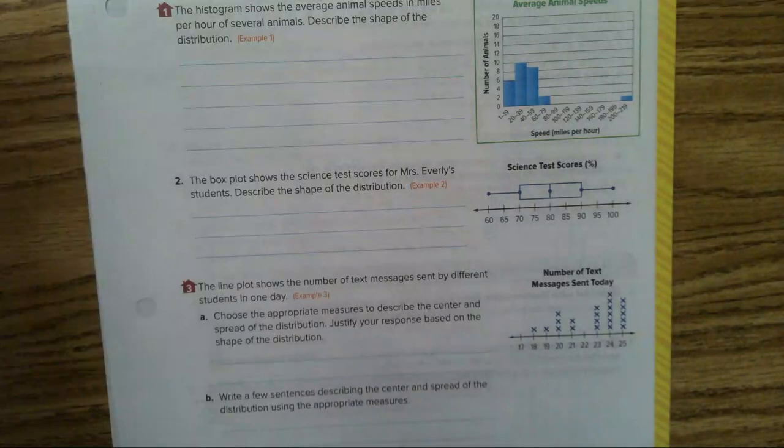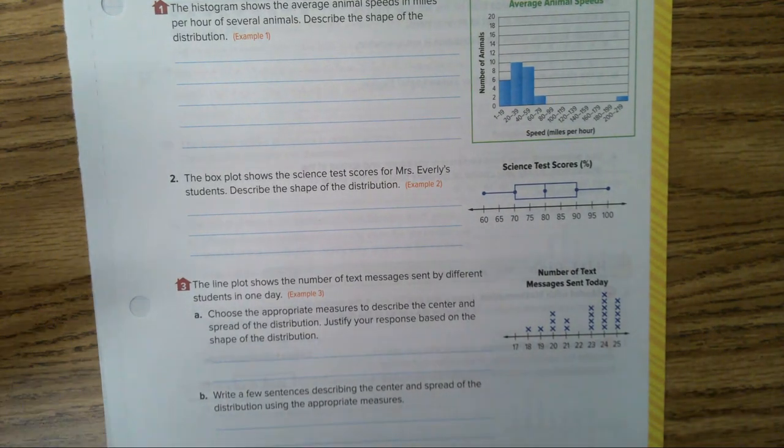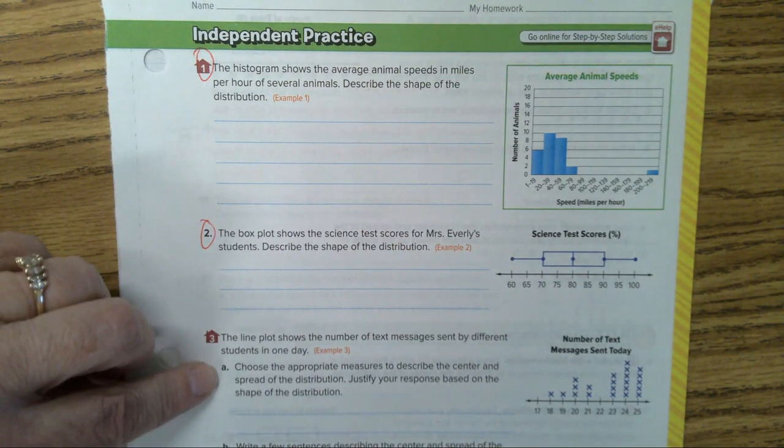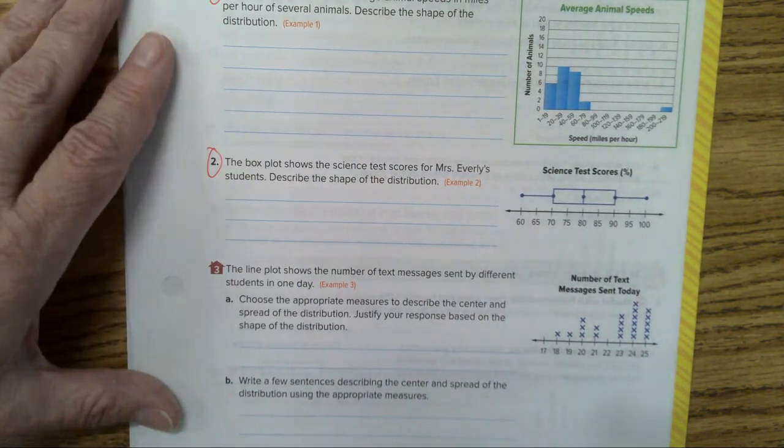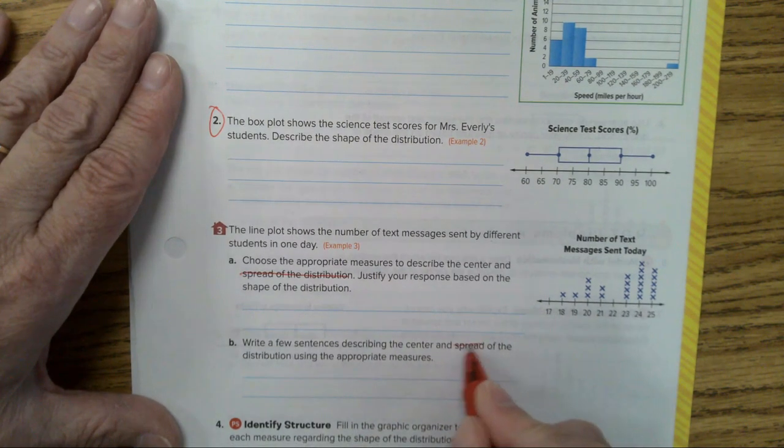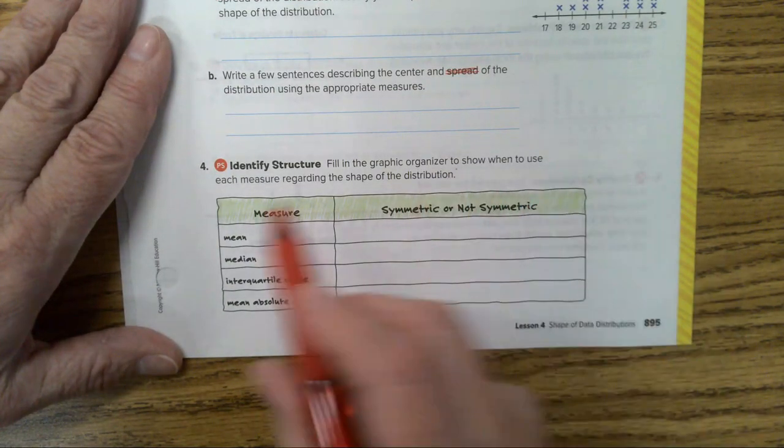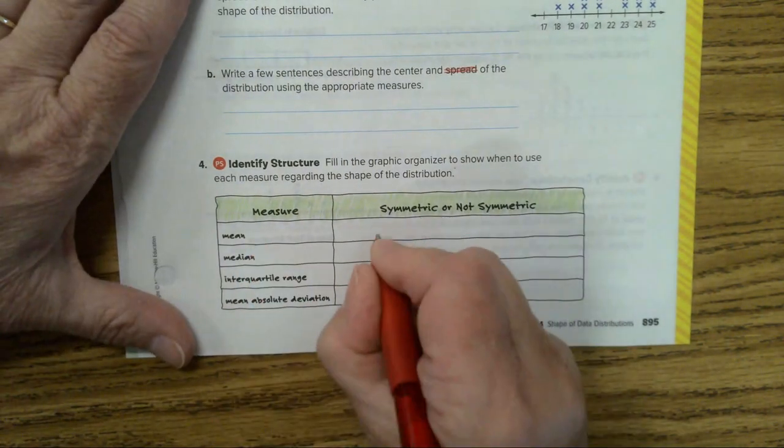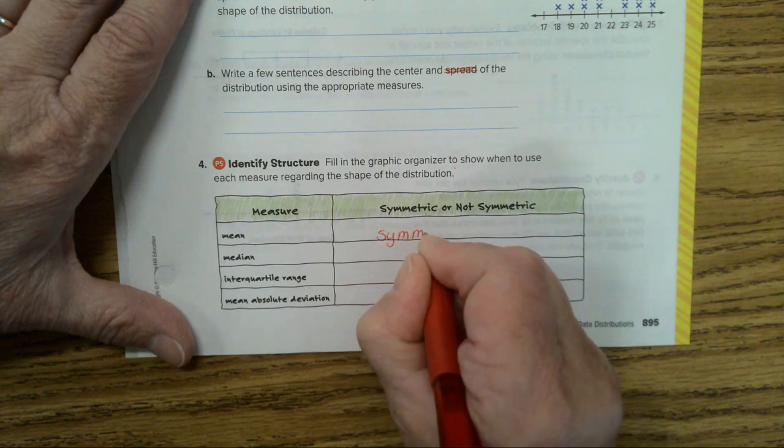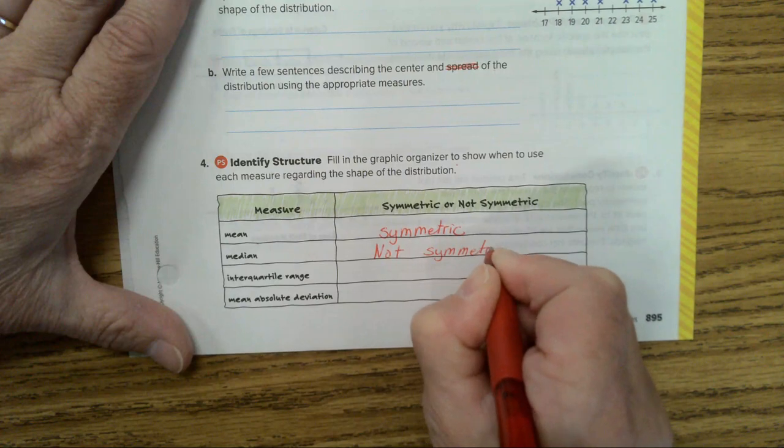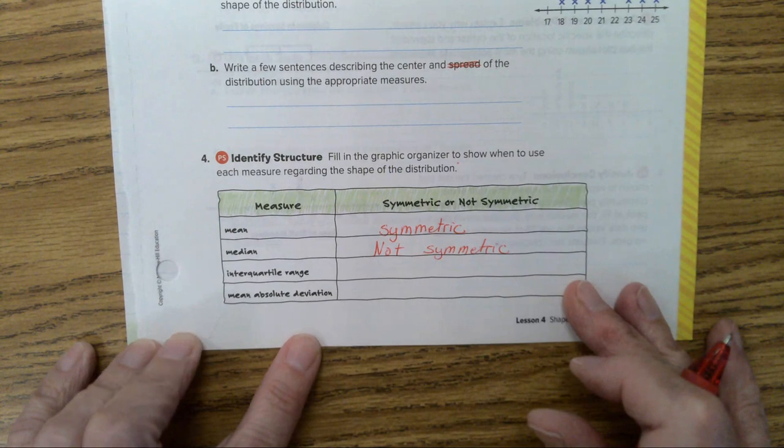Now, what are we going to do for homework tonight? What I would like for you to do, I want you to do number one. Number two. In number three, don't do the spread. Just use the measure of center and justify your response. And once again, we're not going to really deal with the spread. I just want you to deal with the measure of center. And then number four, it says, fill in the graphic organizer to show when to use each measure regarding the shape of the distribution. I'm just going to give you the answers to this one right now. And you all know this. When do you use the mean? When it's symmetric. Median. When it's not symmetric. Now, the other two, it's not going to really be on your test as far as I know. Right now, I don't think it's a sixth grade standard.